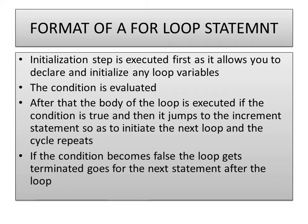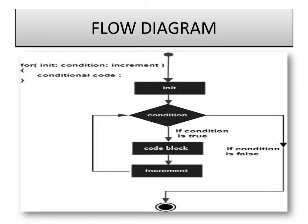This is the format of the for loop. The initialization step is executed first, as it is allowed to declare and initialize any loop variable. After that the condition is evaluated. If the condition is true, the body of the loop is executed, and then it jumps to the increment statement so that we can initiate the next loop, and the cycle repeats. If the condition becomes false, the looping statements get terminated — it won't enter the body of the loop and will go for the next statement sequentially. This is the flow diagram of the loop: initialization, then the condition — if true, execute the code block, then increment, check the condition again. If false, go to the next statement.